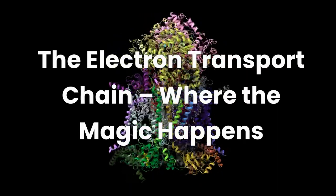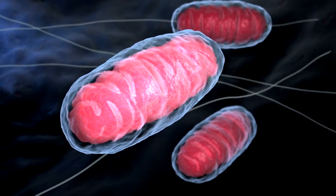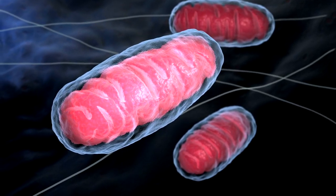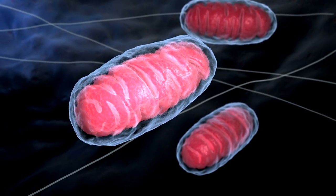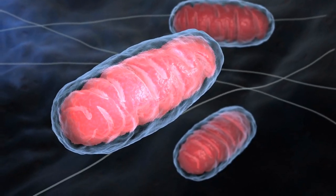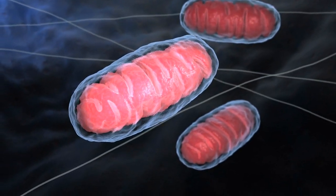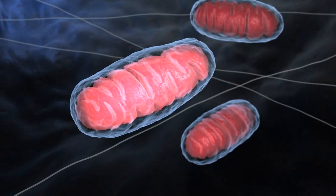Now here comes the grand finale, the electron transport chain. This is where the real energy payoff happens. And it's all going down on the inner membrane of the mitochondria. Picture a conveyor belt system at an airport. But instead of luggage, you have electrons bouncing along from one protein complex to the next, generating a lot of buzz.